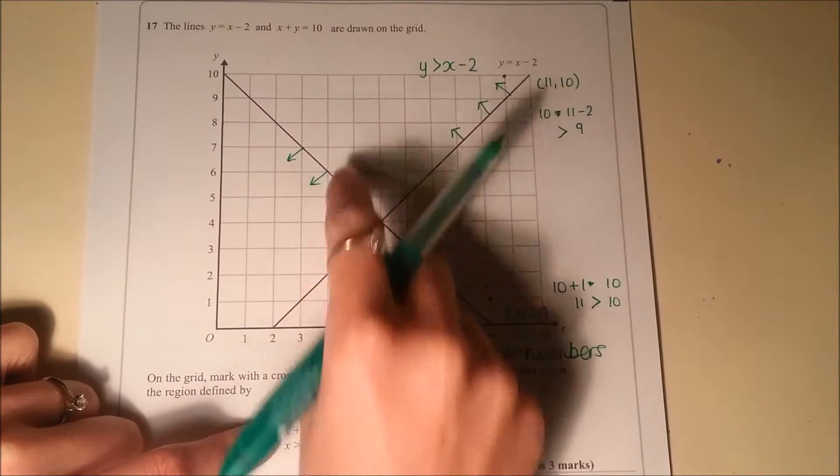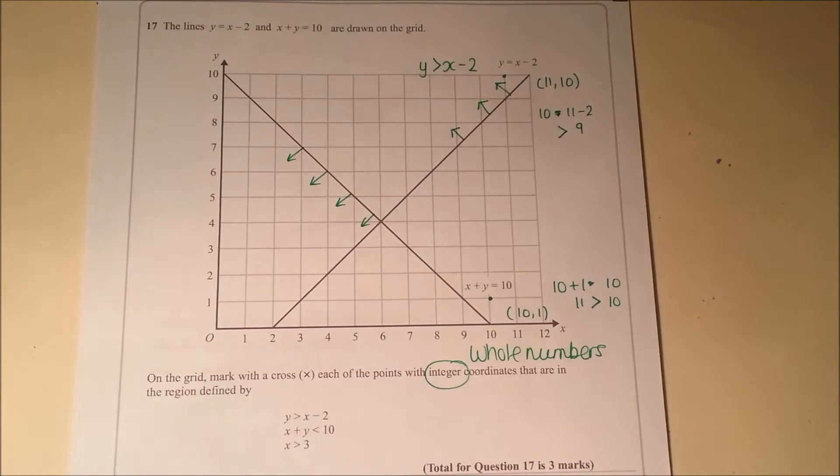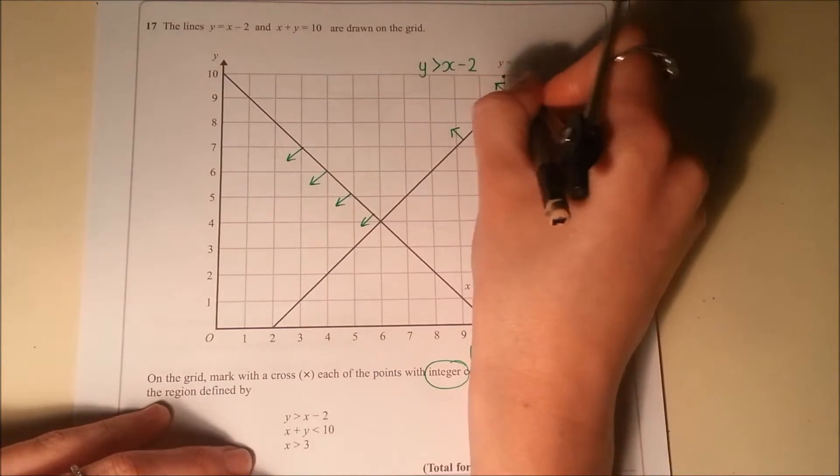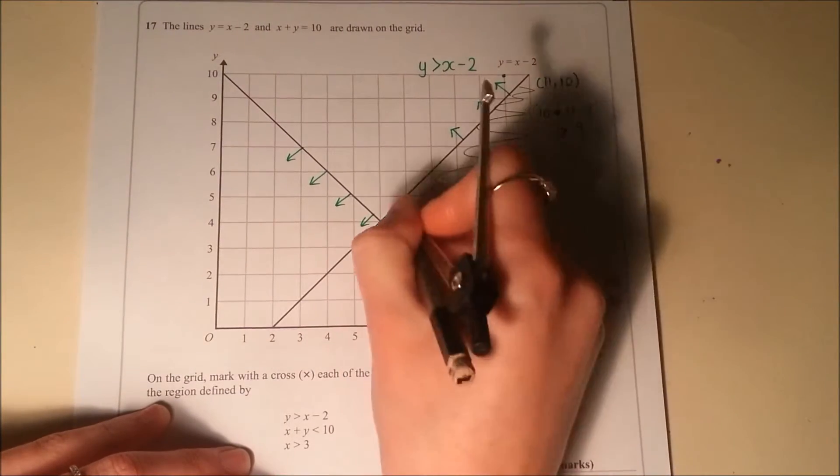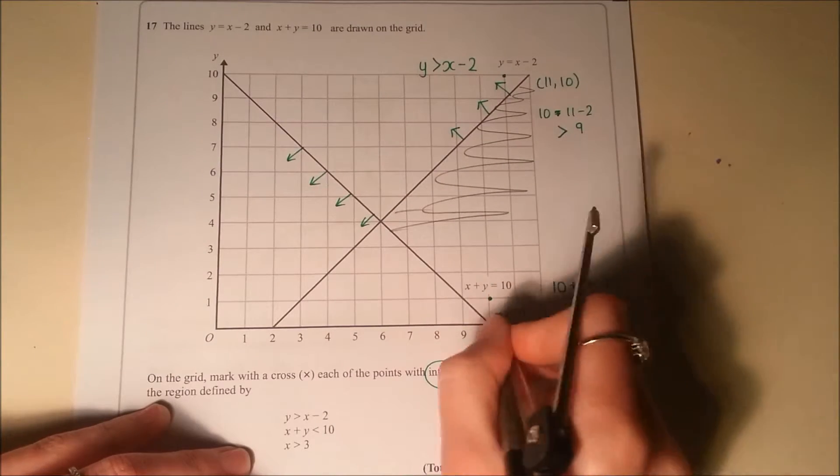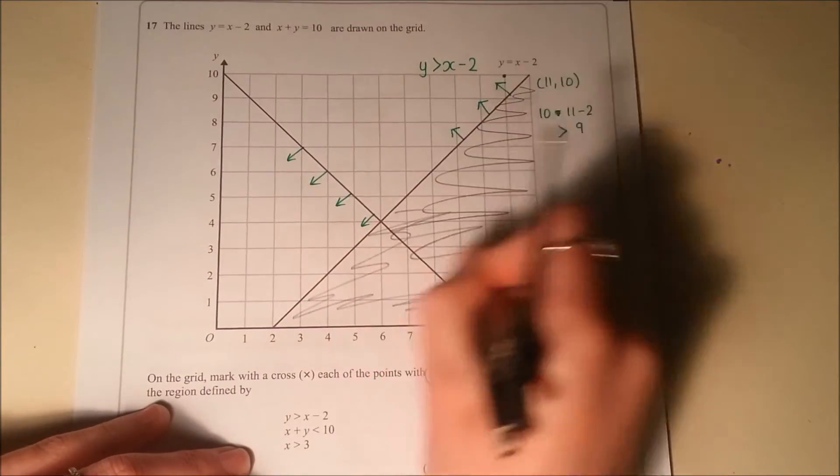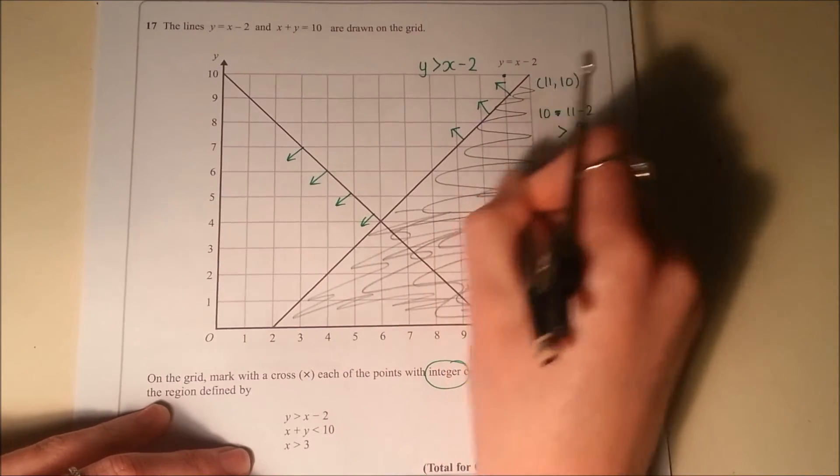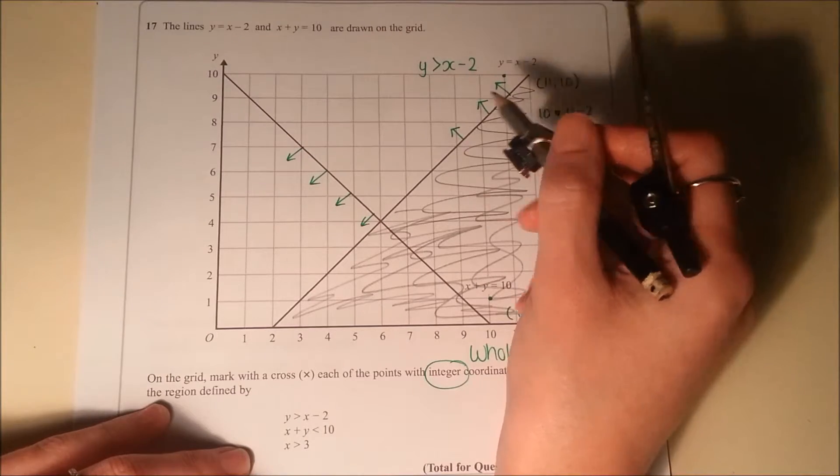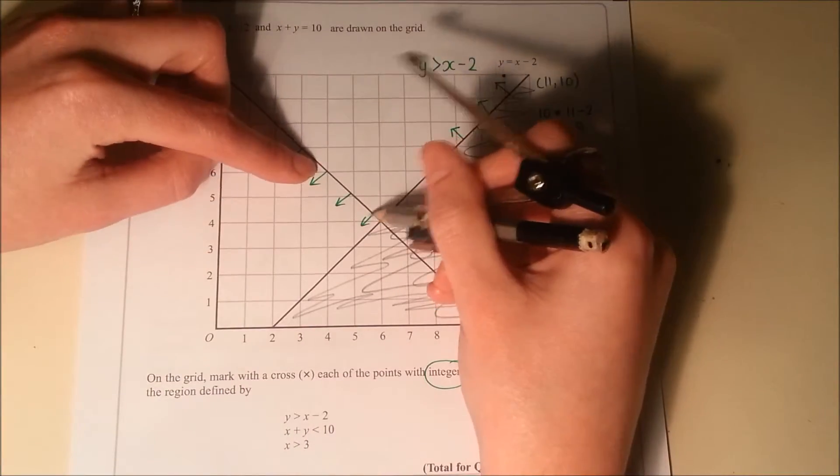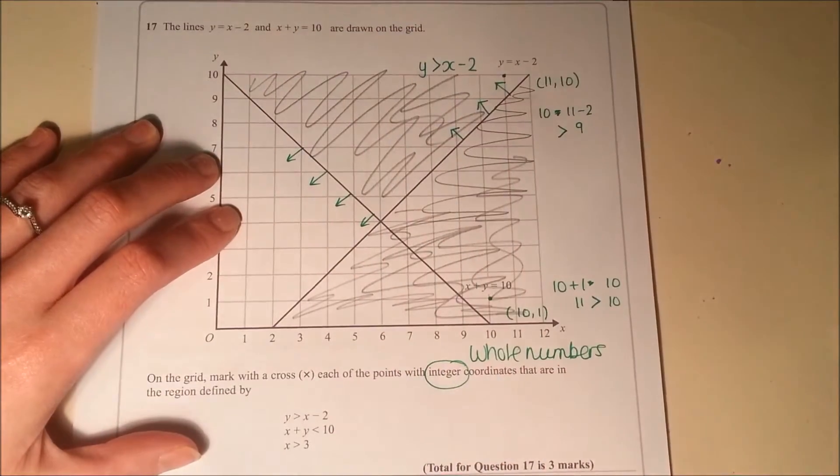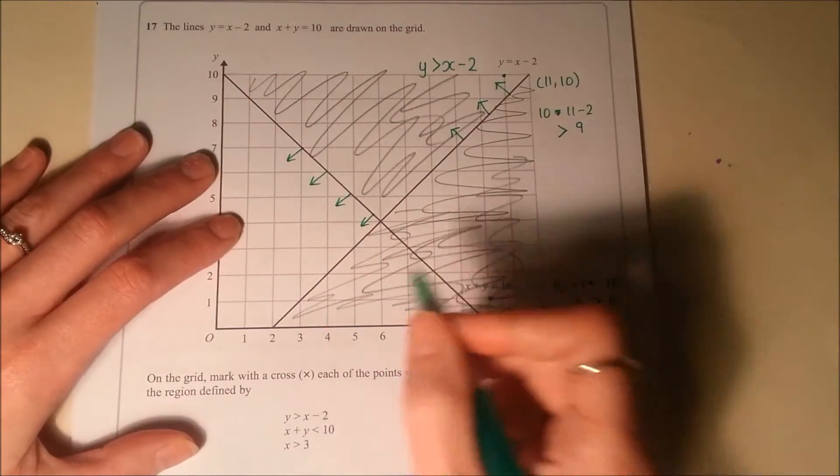So we're looking at this side of this line and this side of this line. Now it might help actually if you scribble out which bits you're not interested in. So it can't be in there. And also, if we're looking at this side of this line, it can't be in there. So let's get rid of that.